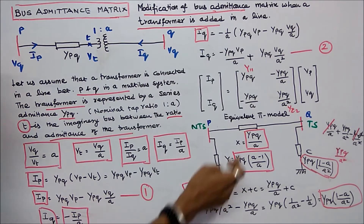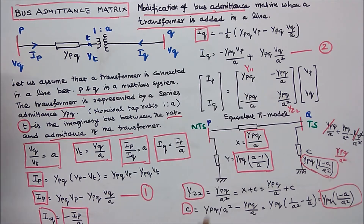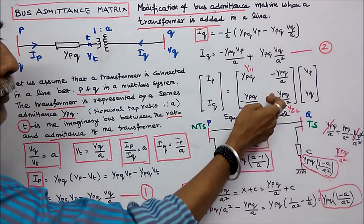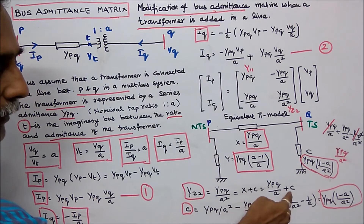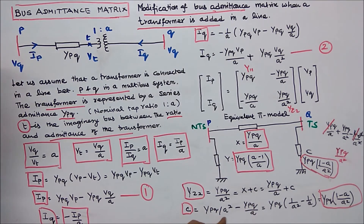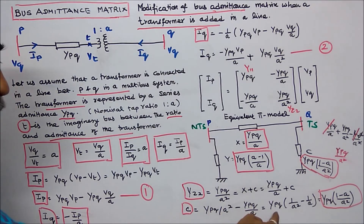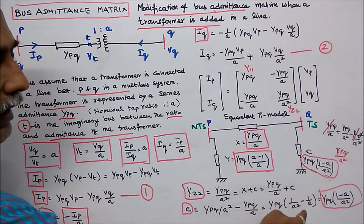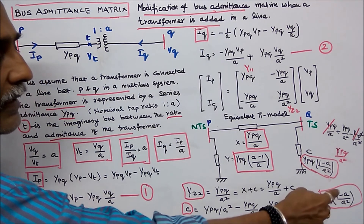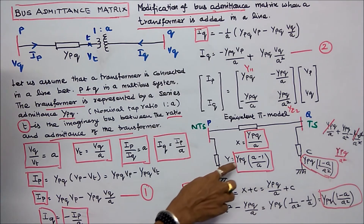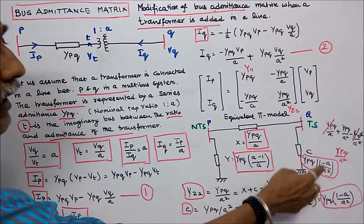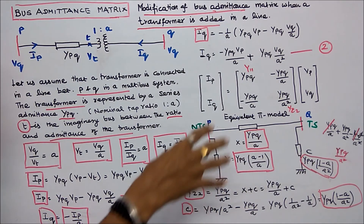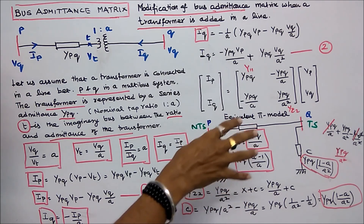Y22 is equal to YPQ divided by A. So X plus C equals YPQ divided by A, and X equals YPQ divided by A. Therefore C equals YPQ divided by A squared minus YPQ divided by A, which equals YPQ multiplied by (1 divided by A squared minus 1 divided by A). This can be written as YPQ multiplied by (1 minus A) divided by A squared. On the tap side, the shunt admittance is YPQ multiplied by (1 minus A) divided by A squared, and the series admittance is YPQ divided by A.